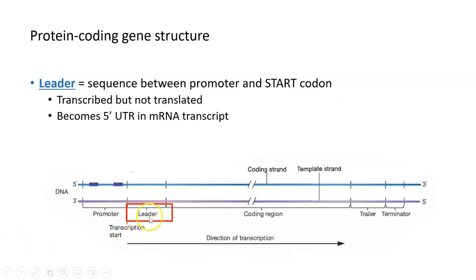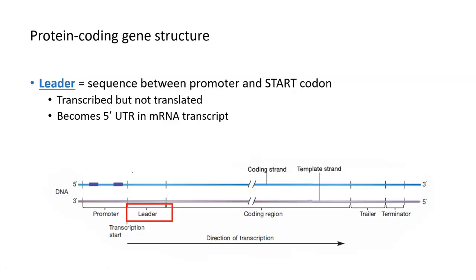Moving a little bit downstream, closer to the coding region and after the promoter, there's a sequence called the leader sequence. This leader sequence is transcribed or made into RNA, but it's never translated. You will see this sequence in an mRNA, and it becomes what we refer to as the five prime UTR, or the five prime untranslated region. It allows recognition of the mRNA during translation and provides a place for the ribosome to bind, so the leader region is important as well.